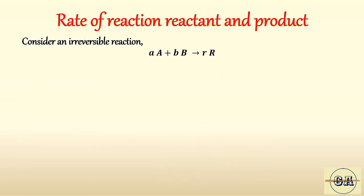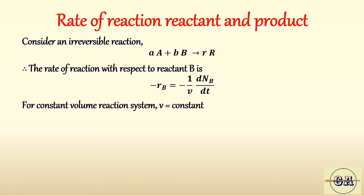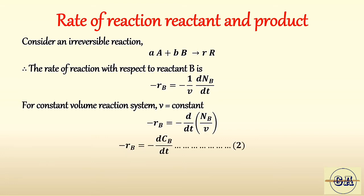Now let's write the rate of reaction for reactant B. The rate of reaction for reactant B is: minus rB equals minus one divided by V, dNB by dT. The minus sign represents that as the reaction proceeds, the number of moles of reactant B decreases. For a constant volume batch reactor, volume V is constant, so: minus rB equals minus dCB by dT.